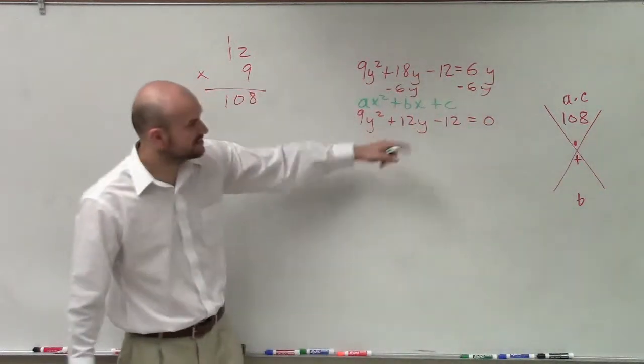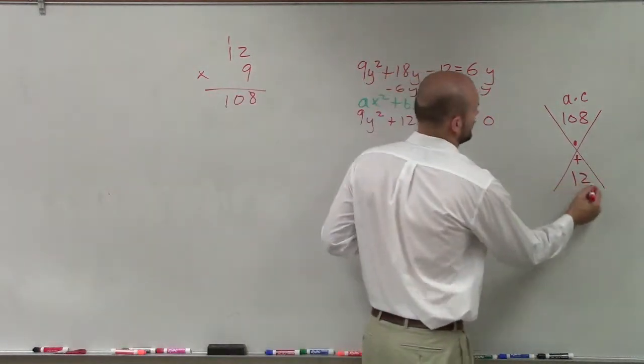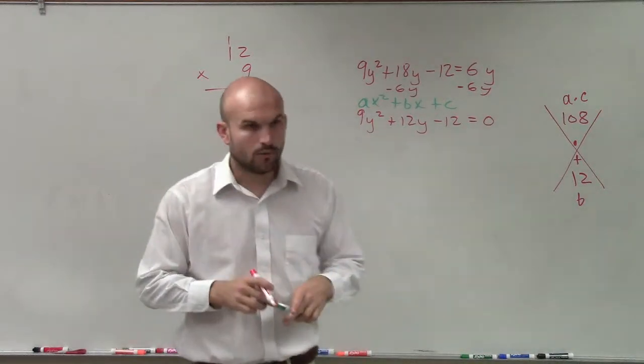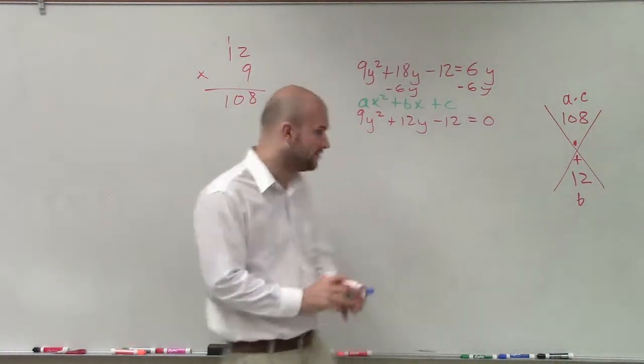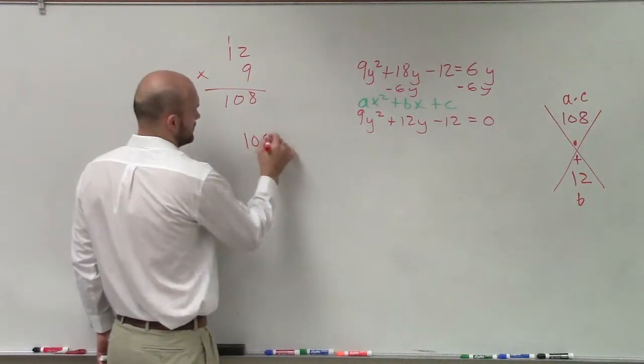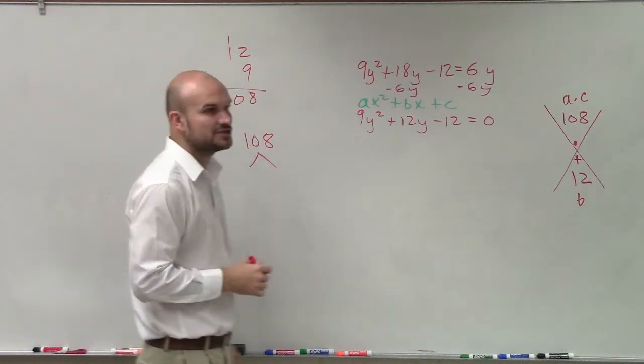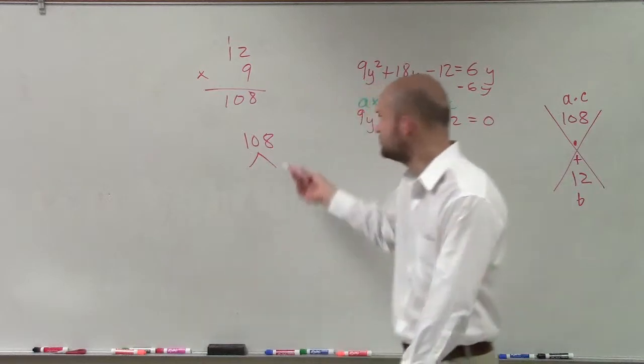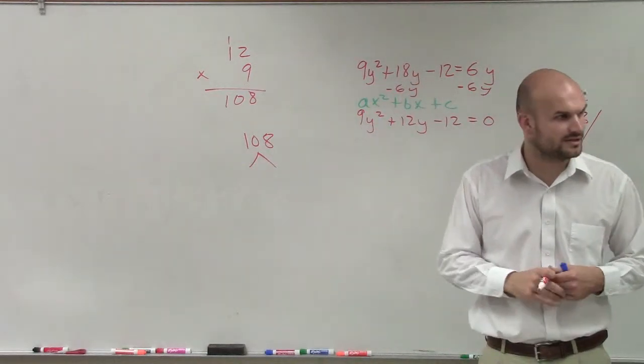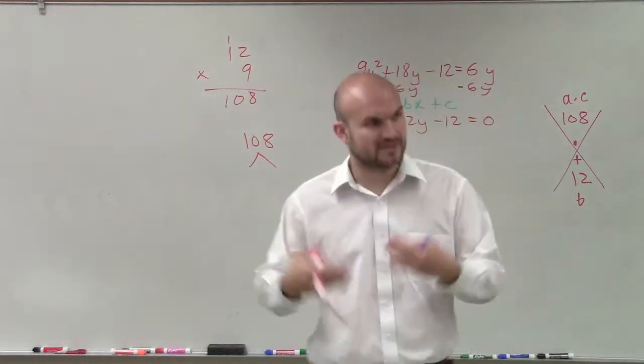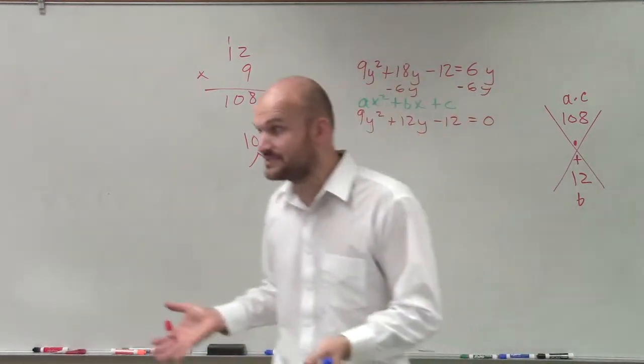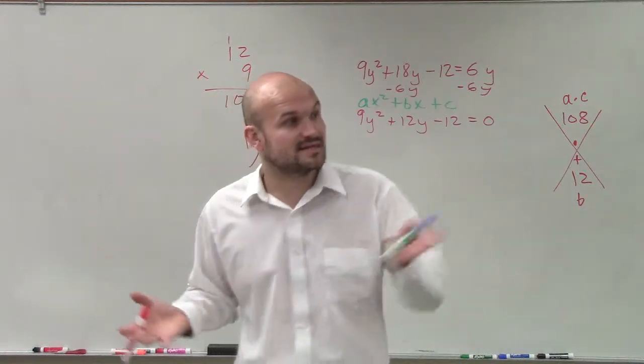And then our b is going to be positive 12. Now, if you don't know what two numbers multiply to give you 108 and add to give you 12, then do a factor tree. Either factor tree or just start factoring. What two numbers multiply to give you 108? Just start listing all the factors. You can divide it by 2, divide it by 3, divide it by 4, divide it by 5. I know it takes a lot of work sometimes, but that's some things you have to go through.